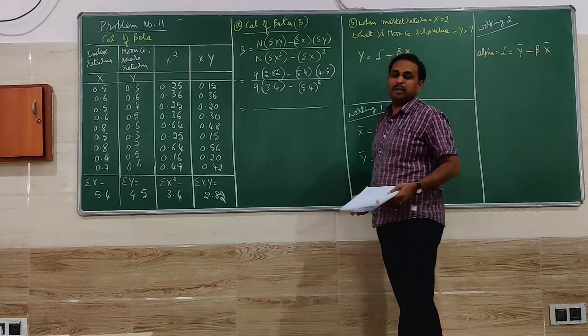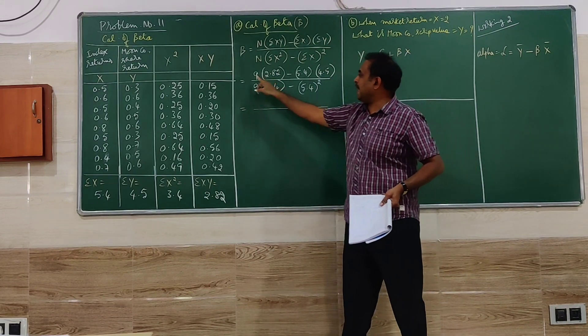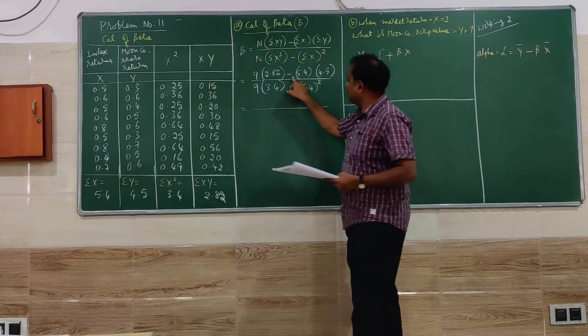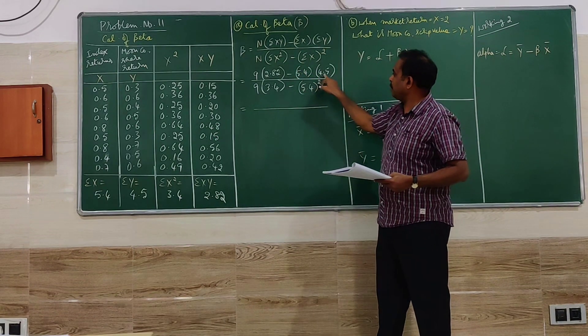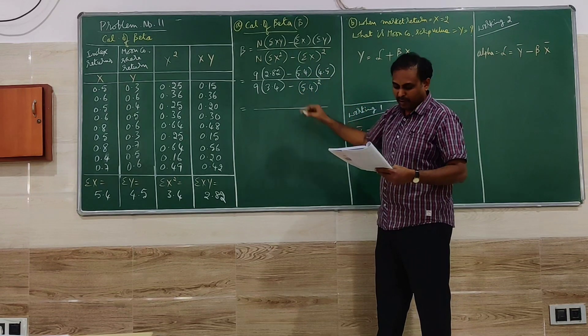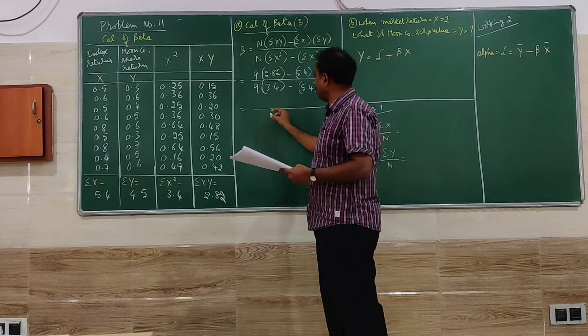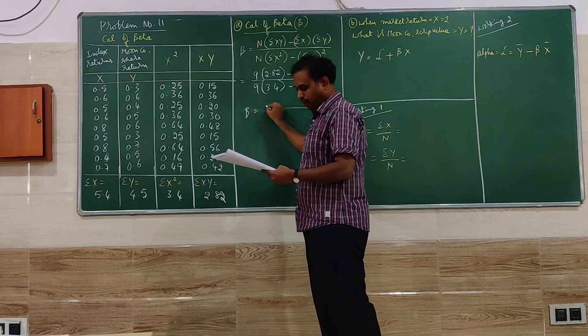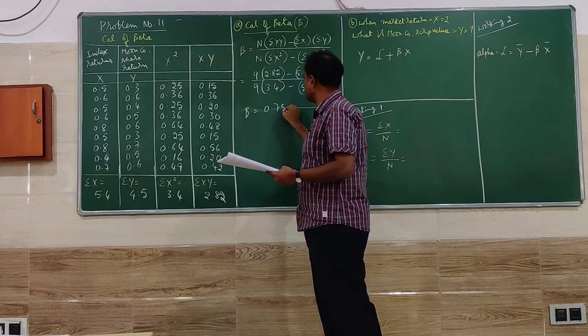Let me go for simplification. So 9 into 2.82 and then minus 5.4 into 4.5. If you simplify the whole information straight away you get beta value of 0.75.